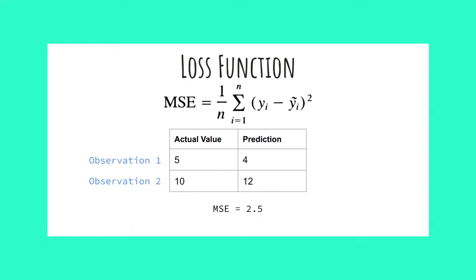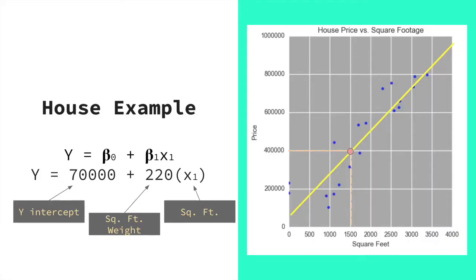This 2 and a half means that on average, a prediction from our model will produce a squared error of 2 and a half. Now that we know what a loss function is, let's go back to our original example of predicting house prices with one variable, square footage.